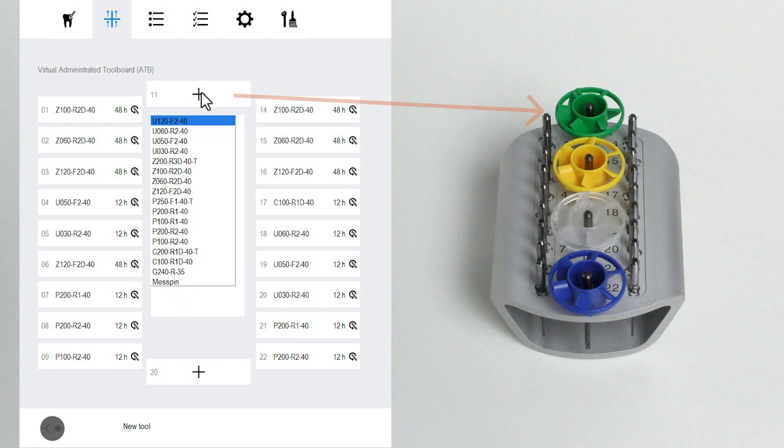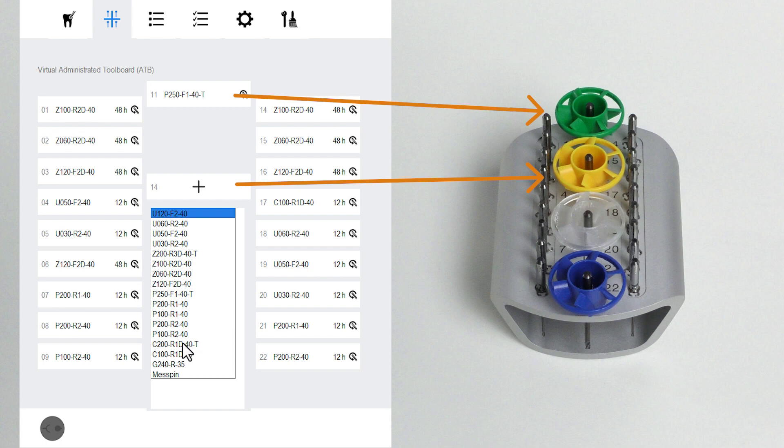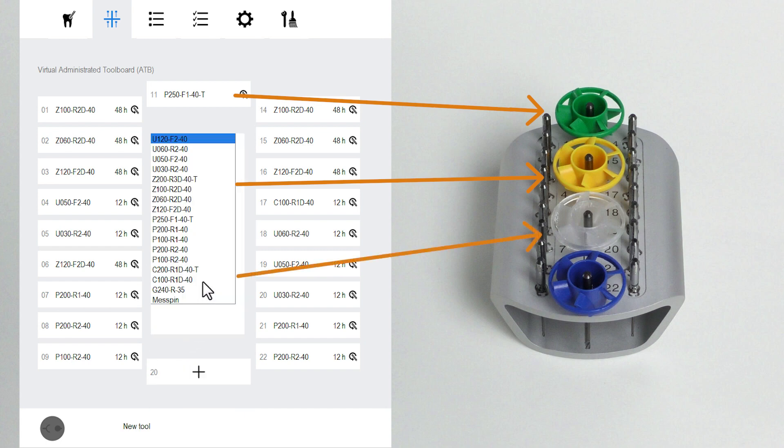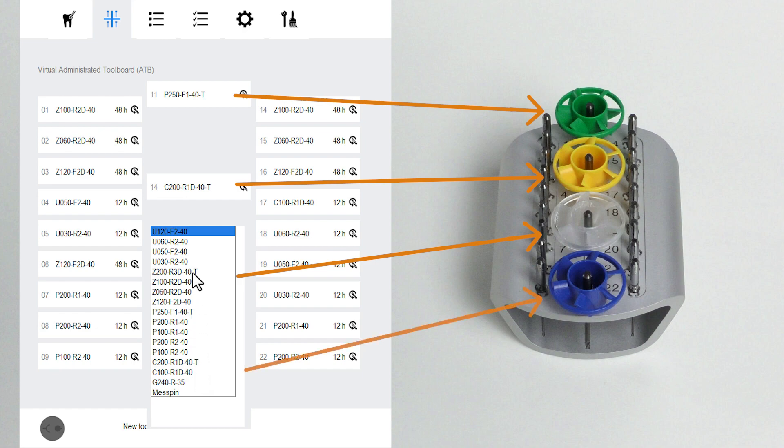The virtual ATB in Dental CNC maps the structure of the physical ATB. Clearly assigning physical and virtual tools lets you easily track tool lives in Dental CNC.